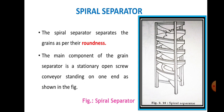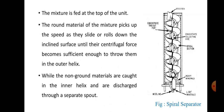These two helixes play an important role during separation of the material. The mixture is first fed at the top of the unit — there is no hopper; we simply place grain at the top of the spiral separator. The round material in the mixture picks up speed because of its roundness as it slides or rolls down the inclined surface.